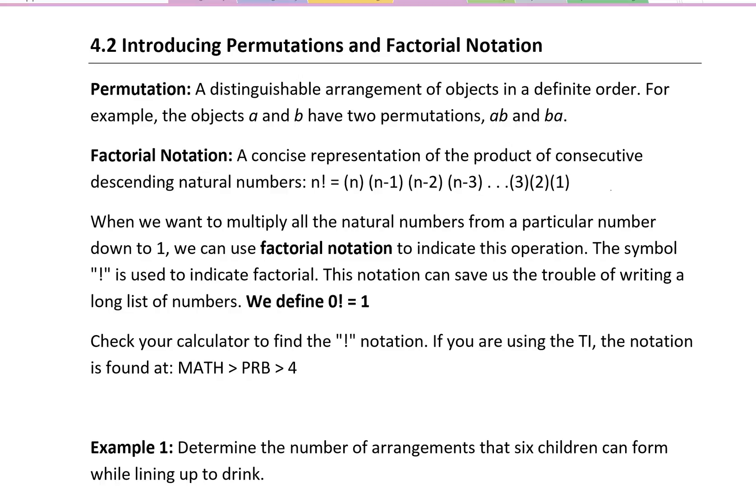Factorial notation is a concise representation of the product of consecutive descending natural numbers. For example, if the number is n factorial, then n, n minus 1, n minus 2, n minus 3, and you're multiplying those. So if it was 5 factorial, 5 times 4 times 3 times 2 times 1.